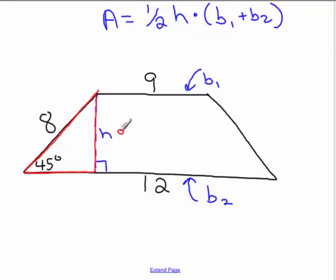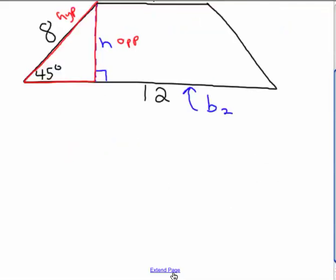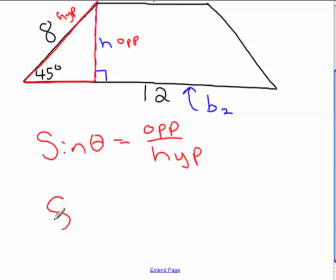H would be opposite, 8 would be hypotenuse, and so to find the height of that triangle, we're going to use sine, because sine theta is defined as opposite over hypotenuse. And so sine of 45 degrees equals H over 8.